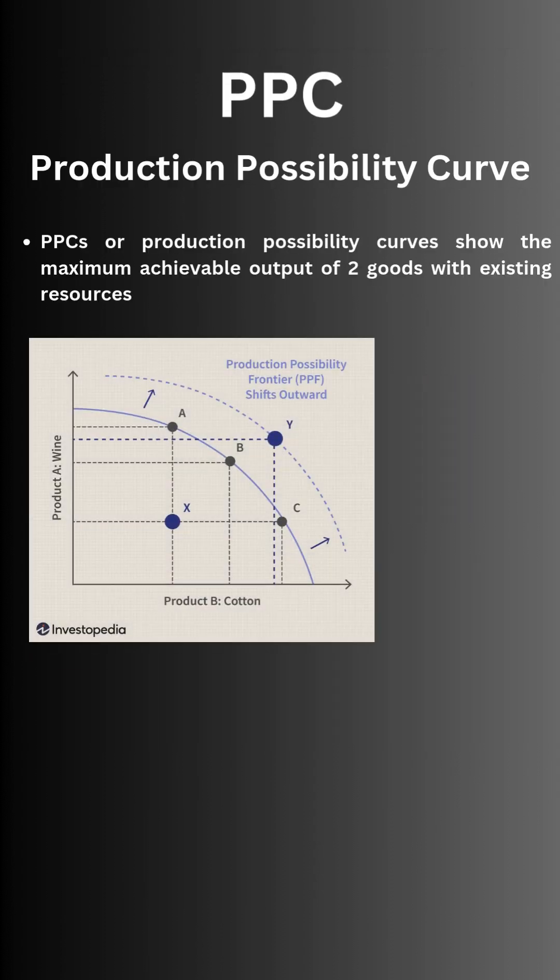PPCs or Production Possibility Curves show the maximum achievable output of two goods with existing resources. There are some points on PPCs that you will need to know about. Let's look at one.